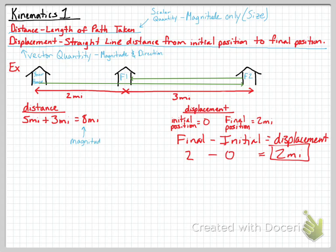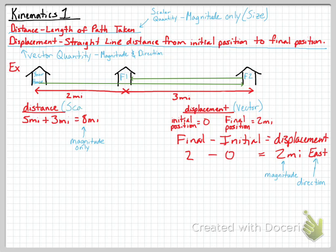That's our answer, but not the complete answer. For distance we get magnitude only — eight miles. For displacement, we get two miles, and since friend one's house is to the east of your house, you had to go two miles east to get there. So distance is eight miles, displacement is two miles east — the magnitude is two miles and east is the direction, making displacement a vector quantity and distance a scalar quantity.